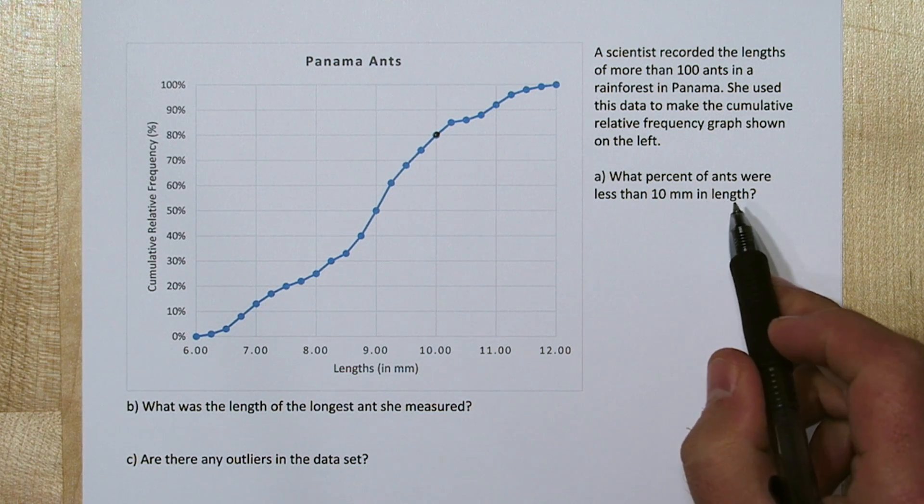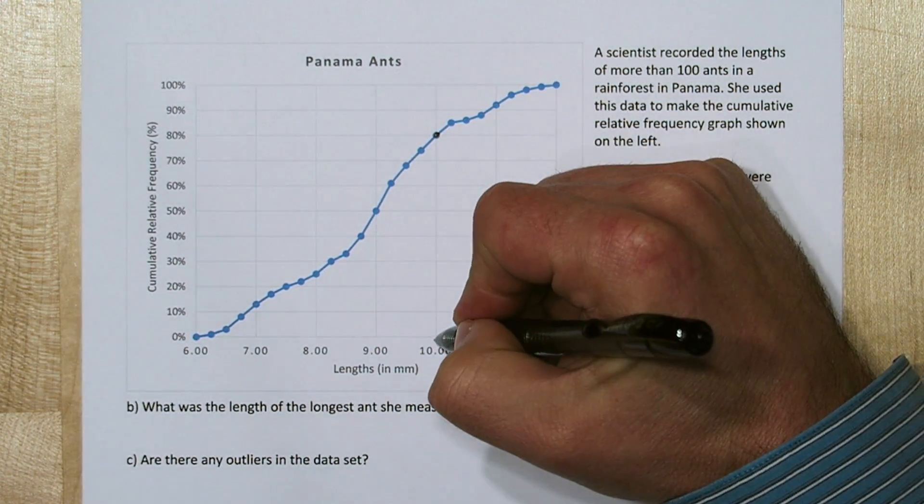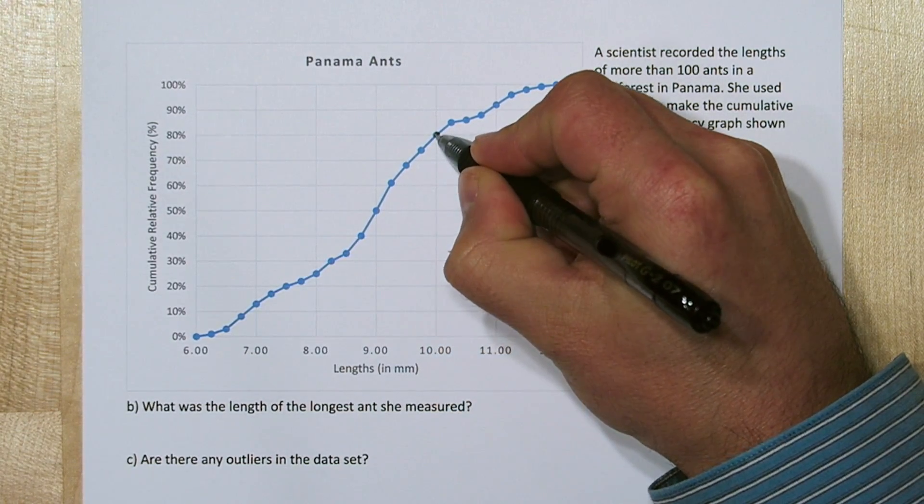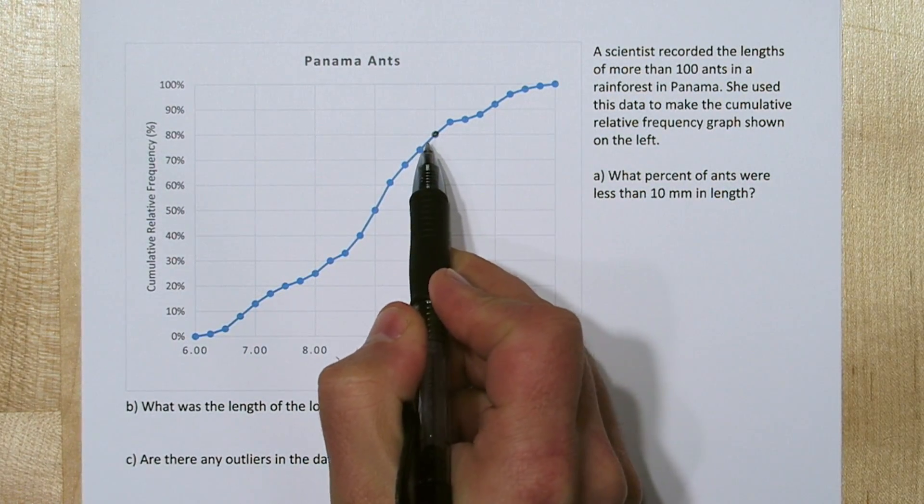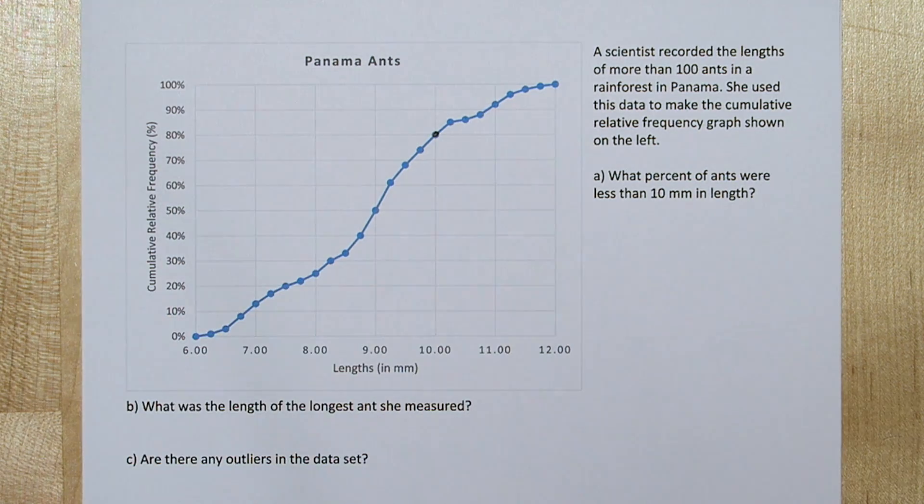So when we want to know what percent of ants are less than 10 millimeters in length, we just go to 10 millimeters and then follow this over to the corresponding y-value and we get 80%.